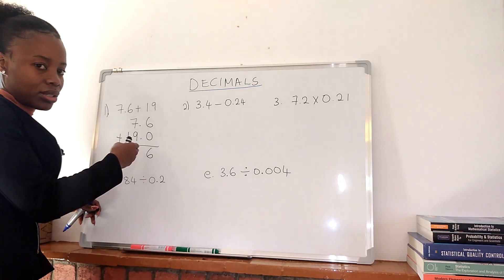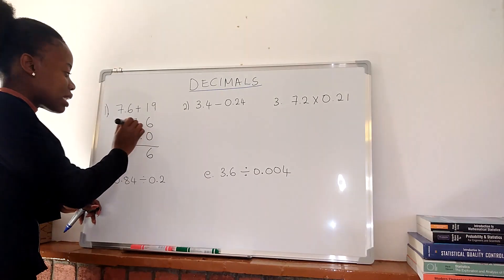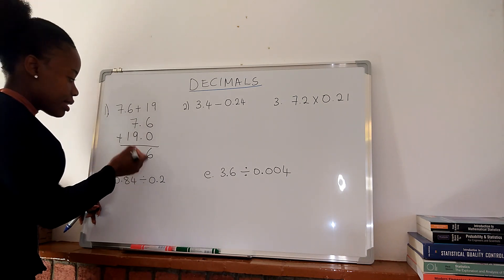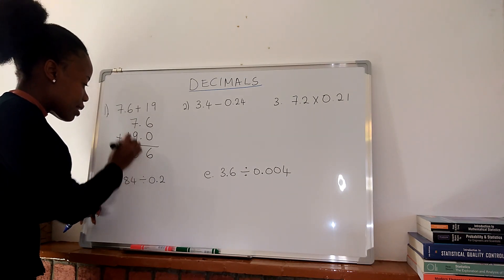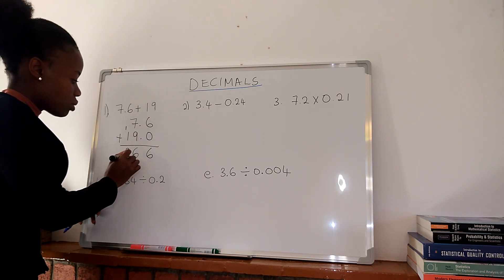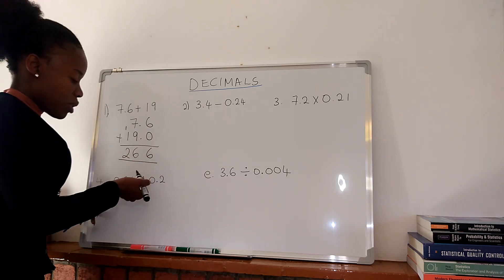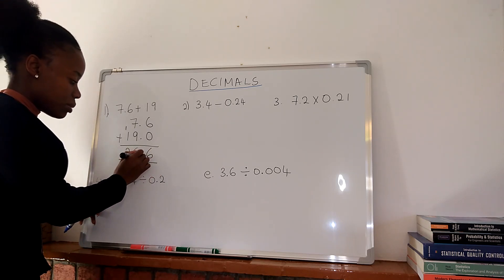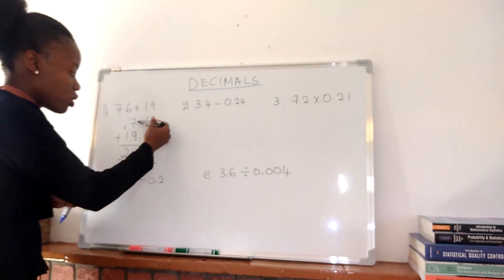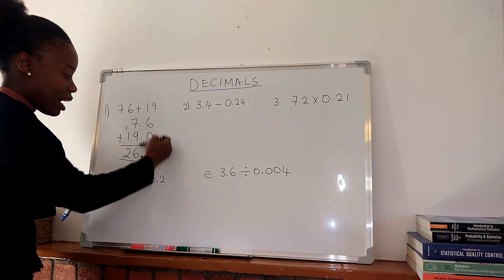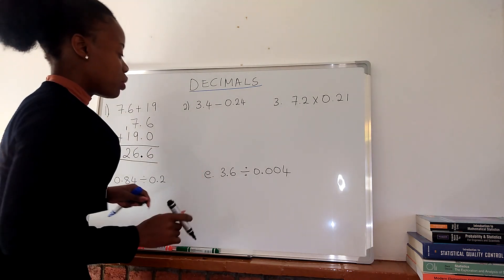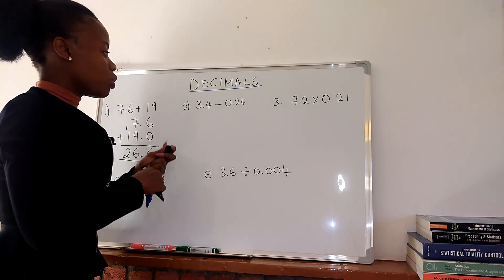Then 7 plus 9 is 16 — write 6 and carry 1. And 1 plus 1 is 2. So the answer is 26.6. For adding and subtracting, make sure that your decimals are along the line. Now let's get to number two.